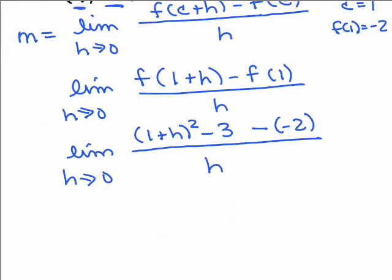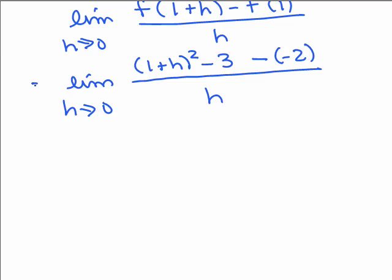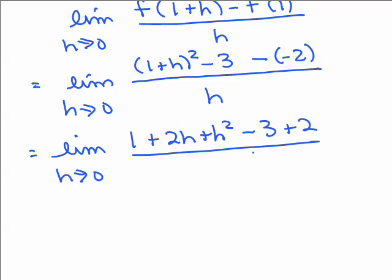And now you have to do some algebra, see what we get here. So we've got 1 plus 2h plus h squared when we square the 1 plus h, minus 3 plus 2, all over h. And what do we have here, 1 minus 3 plus 2, we're going to end up with the numerator 2h plus h squared.